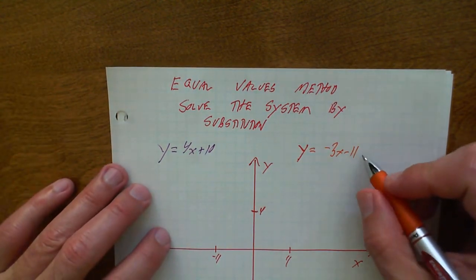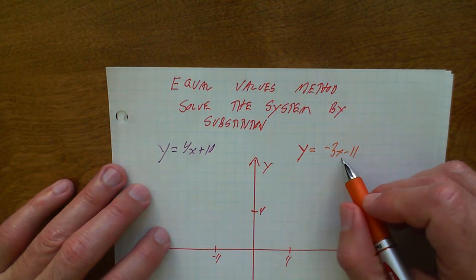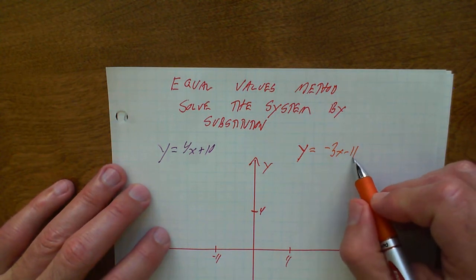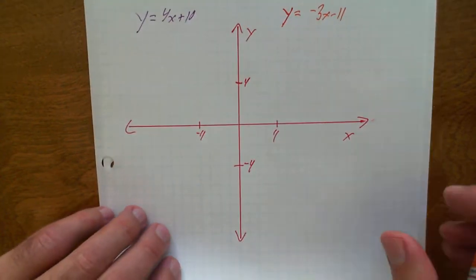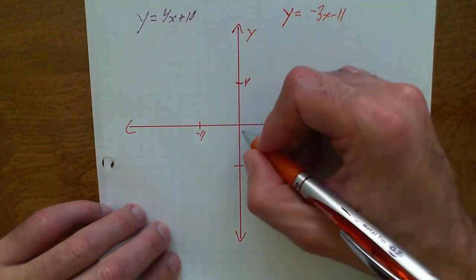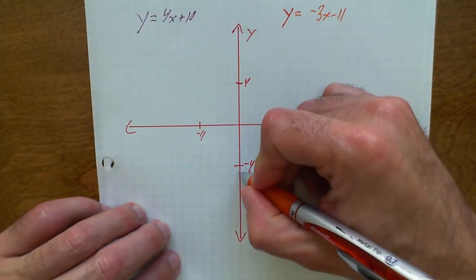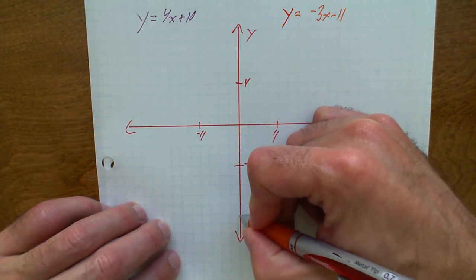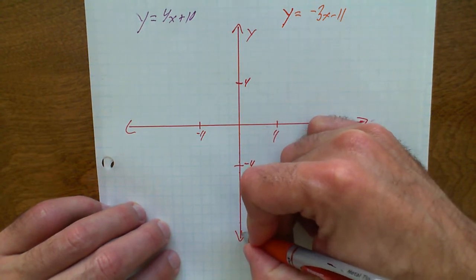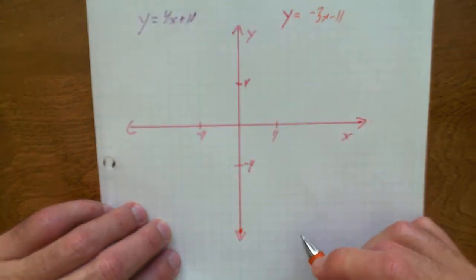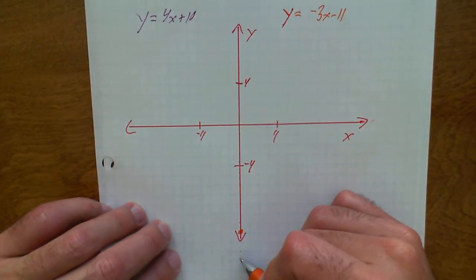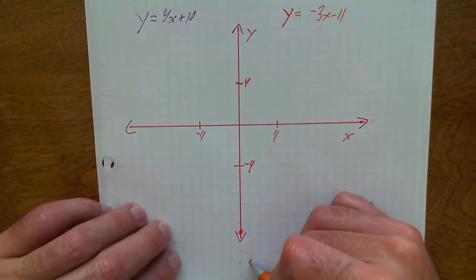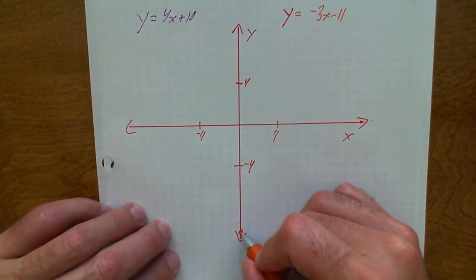The y-intercept — let's graph y equals negative 3x minus 11. The y-intercept is negative 11, so let's go negative 11 — way down there. Then negative 3 is my slope, so I go down 1, 2, 3 over 1. But I don't have room that way, let's go up this way: up 1, 2, 3 over 1, and so on.